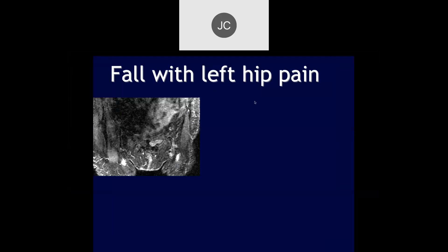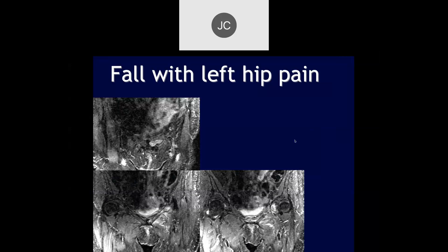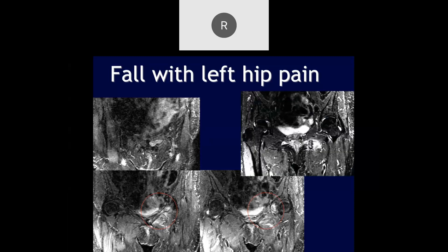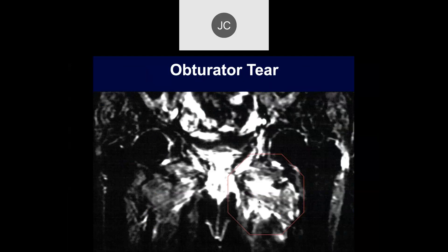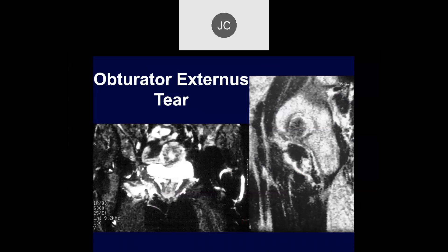We'll continue to talk about trauma involving the hip. This case is a fall with left hip pain. It looks like there's some edema in that left parasymphyseal pubic ramus area and the anterior acetabulum. On the coronal STIR sequence, there's edema in the adjacent musculature. With fractures of the pelvic rim, you can get hemorrhage into the adjacent soft tissue, but sometimes this could also be tears of the muscles. This is a blowup of that injury showing a fracture with an obturator externus tear.